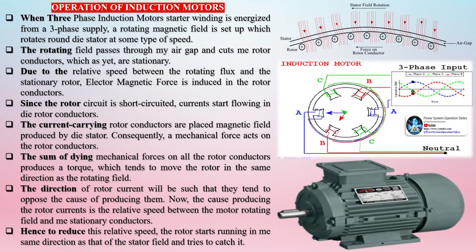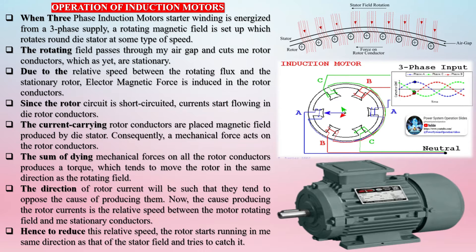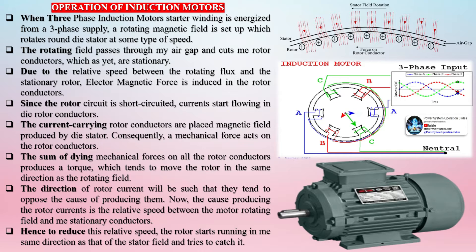When a three-phase induction motor's stator winding is energized from a three-phase supply, a rotating magnetic field is set up which rotates around the stator at synchronous speed. The rotating field passes through the air gap and cuts the rotor conductors, which are stationary. Due to the relative speed between the rotating flux and the stationary rotor, an electromagnetic force is induced in the rotor conductors. Since the rotor circuit is short-circuited, currents start flowing in the rotor conductors.